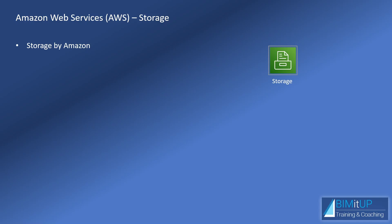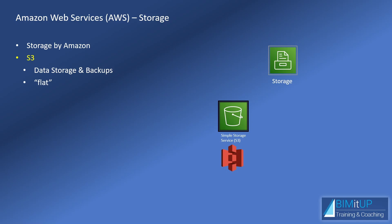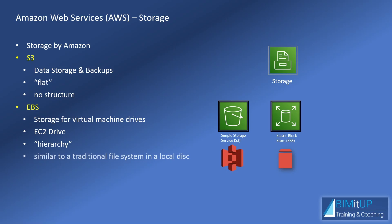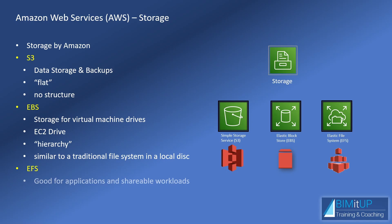What are the storage options that Amazon offers? You have S3, which is Simple Storage Service — claimed to be good for data storage and backups, with a flat architecture and no hierarchy. You have EBS, or Elastic Block Store, which is essentially storage for a virtual machine or EC2 drive. An EC2 instance is a virtual server in Amazon Elastic Compute Cloud, used for running applications on AWS infrastructure. It has some hierarchy and is more similar to a traditional file system. Then you have EFS, or Elastic File System, good for applications and shareable, high-workload scenarios. It is automatically scalable — if you need more storage it expands, if you need less it shrinks, and you pay accordingly.